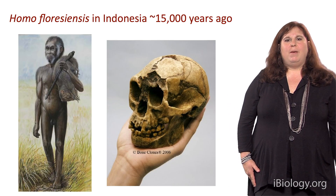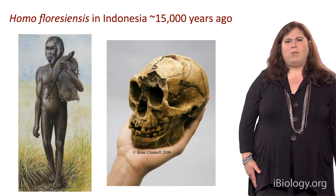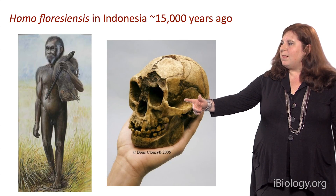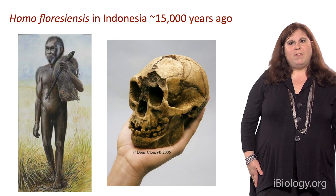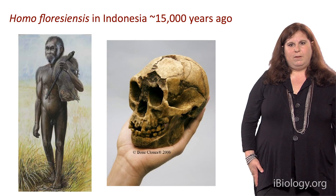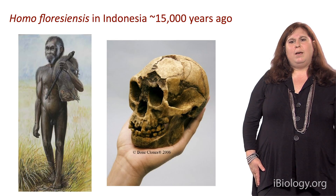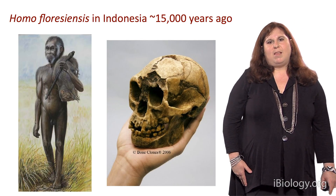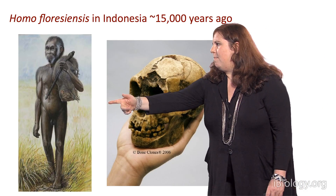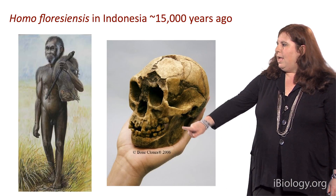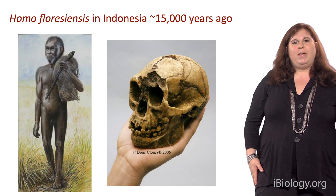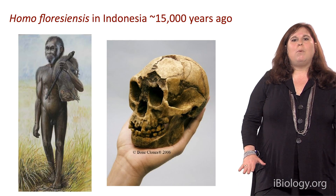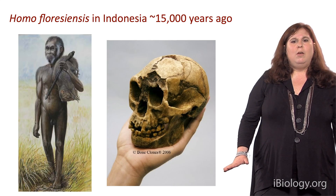A very interesting recent finding was a set of fossils identified on the island of Flores in Indonesia. These fossils show characteristics similar to Homo erectus, and it was proposed that this species may have directly evolved from a Homo erectus ancestor that arrived on the island about 1 million years ago and then evolved in isolation. Two unique features of this species were that they were very short — about the same size as Lucy, around 3 feet tall — and they had tiny brains. There's been debate about whether this is an adaptation or a pathology. What was clear is that there were multiple species outside of Africa within the past 2 million years.